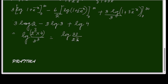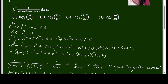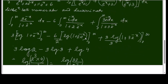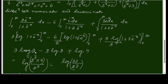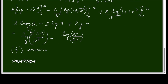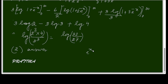Checking which option matches — the answer is option 2, which is log(32/27). If there is any confusion taking this limit, we can substitute t = 1 + e^(-x) and change the limits from 0 to 1. Thank you for watching.